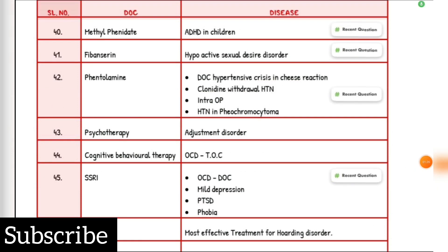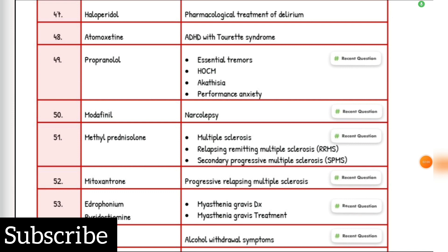ADHD in children drug of choice: Methylphenidate. Hypoactive sexual desire disorder drug of choice: Flibanserin. Hypertensive crisis in cheese reaction, Clonidine withdrawal hypertension, intra-op hypertension, and pheochromocytoma — all have drug of choice: Phentolamine. Adjustment syndrome drug of choice: psychotherapy. OCD treatment of choice: cognitive behavioral therapy. OCD drug of choice and for mild depression, PTSD, phobia: SSRI. Most effective treatment for hoarding disorder: CBT. Pharmacological treatment of delirium: Haloperidol. ADHD with Tourette syndrome: Atomoxetine. Essential tremors, HOCM, akathisia, and performance anxiety drug of choice: Propranolol. Narcolepsy drug of choice: Modafinil.